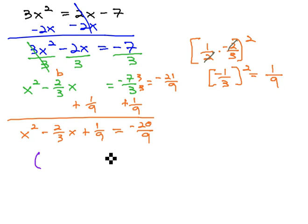The left side, as we've designed it then, is a perfect square. It can factor it as something squared equals negative 20 over 9. We can quickly factor it by taking the square root of the first term, x, the sign from the middle, negative, and the square root of the last term, numerator and denominator, gives us 1 third.